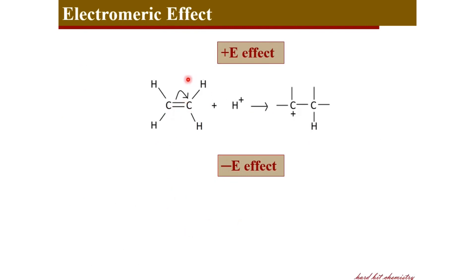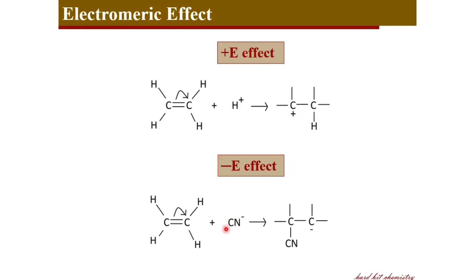Coming to the plus E effect, considering the example of the ethylene molecule — in presence of an acidic reagent like H plus, this pi bond can move to one of the carbon atoms. Both carbons are identical, so let's move this pi electron cloud to one of the atoms so that this carbon becomes negative, to which the proton can attach, and the other carbon stays positive. The plus E effect demonstrates the attachment of this positively charged reagent to that carbon towards which the pi electron clouds were displaced. And in minus E effect, the negatively charged reagent attaches to that carbon away from which the pi electrons moved.